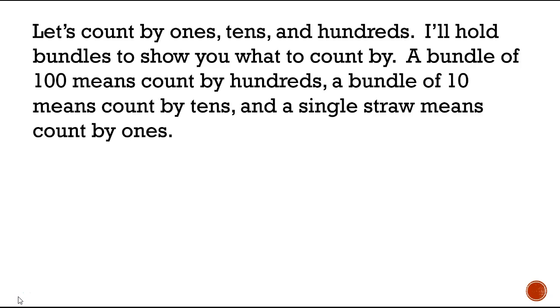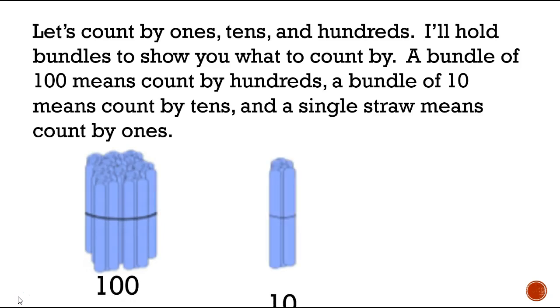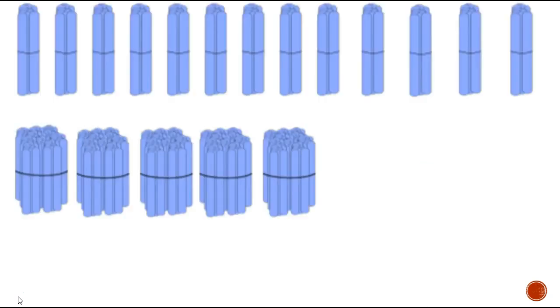I'll hold bundles to show you what to count by. A bundle of 100 means count by hundreds, a bundle of 10 means count by tens, and a single straw means count by ones.